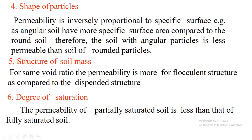Shape of particles: we have angular, sub-angular, rounded, and well-rounded particle types. Permeability is inversely proportional to the specific surface area of the particles. An angular soil has a greater specific surface area compared to rounded soil. Therefore, soil with angular particles has lower permeability than soil with rounded particles, because greater specific surface area creates more resistance to flow.